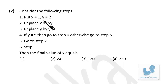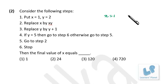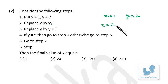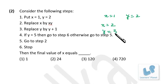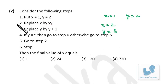Consider the following steps: put X = 1, Y = 2. Then replace X by X×Y, so X = 2. Then replace Y by Y + 1, so Y = 3. If Y equals 5, go to step 6 (stop); otherwise go to step 5, which sends you back to step 2.